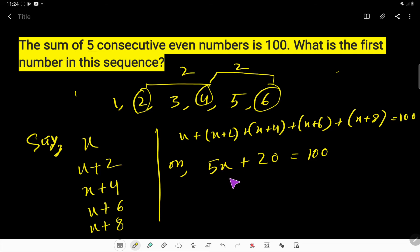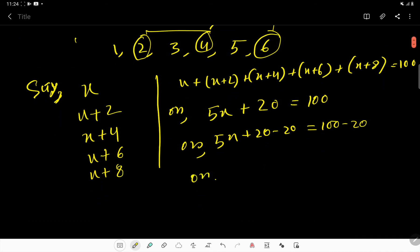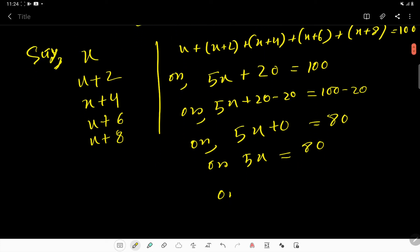So now we have to find out the value of x. So 5x plus 20 minus 20, 100 minus 20. Look, if you deduct 20 from both sides, then you will get this equation. So now you have to solve...